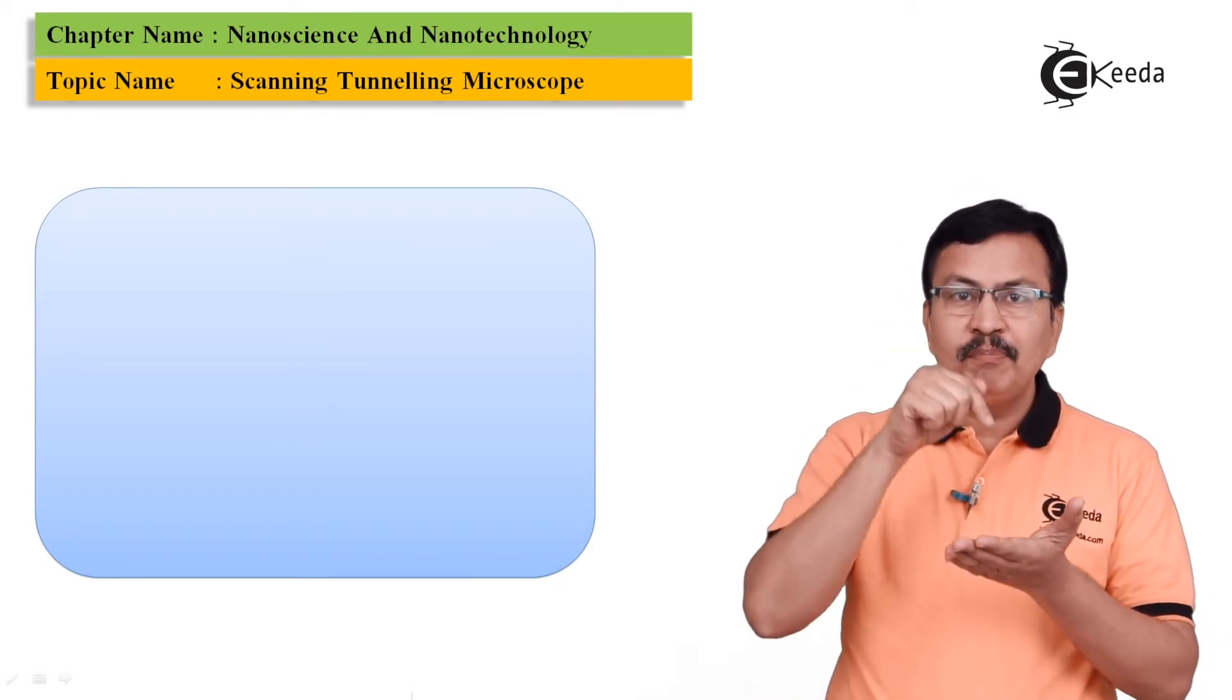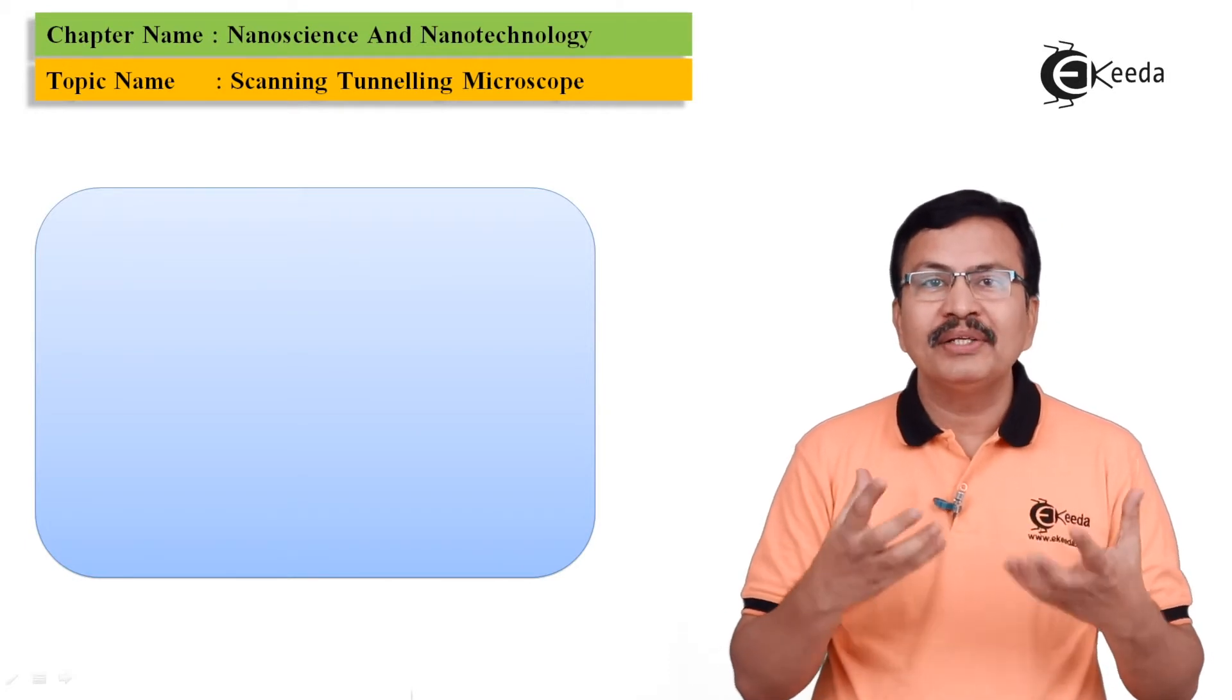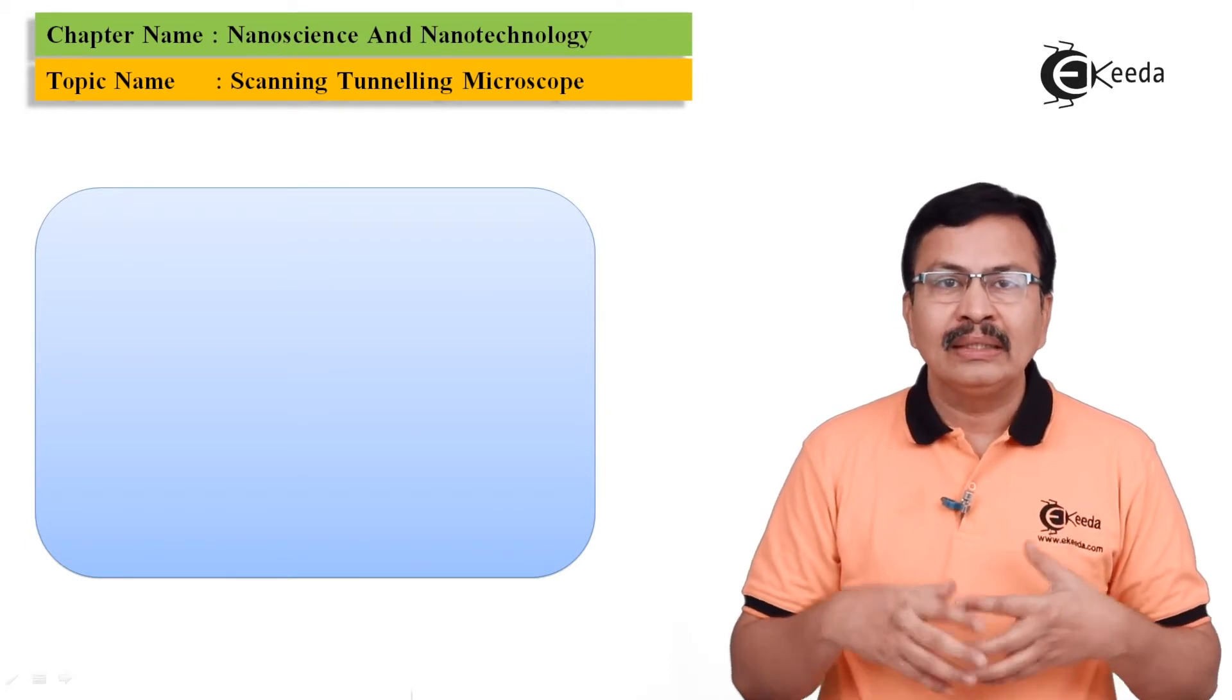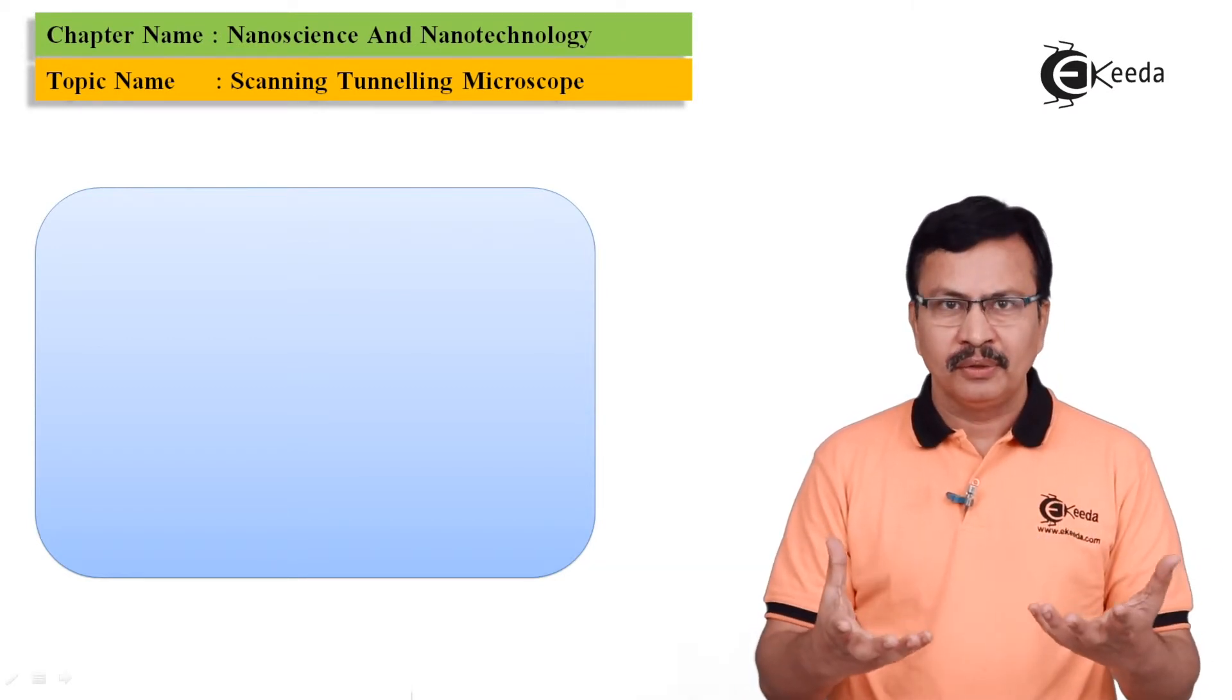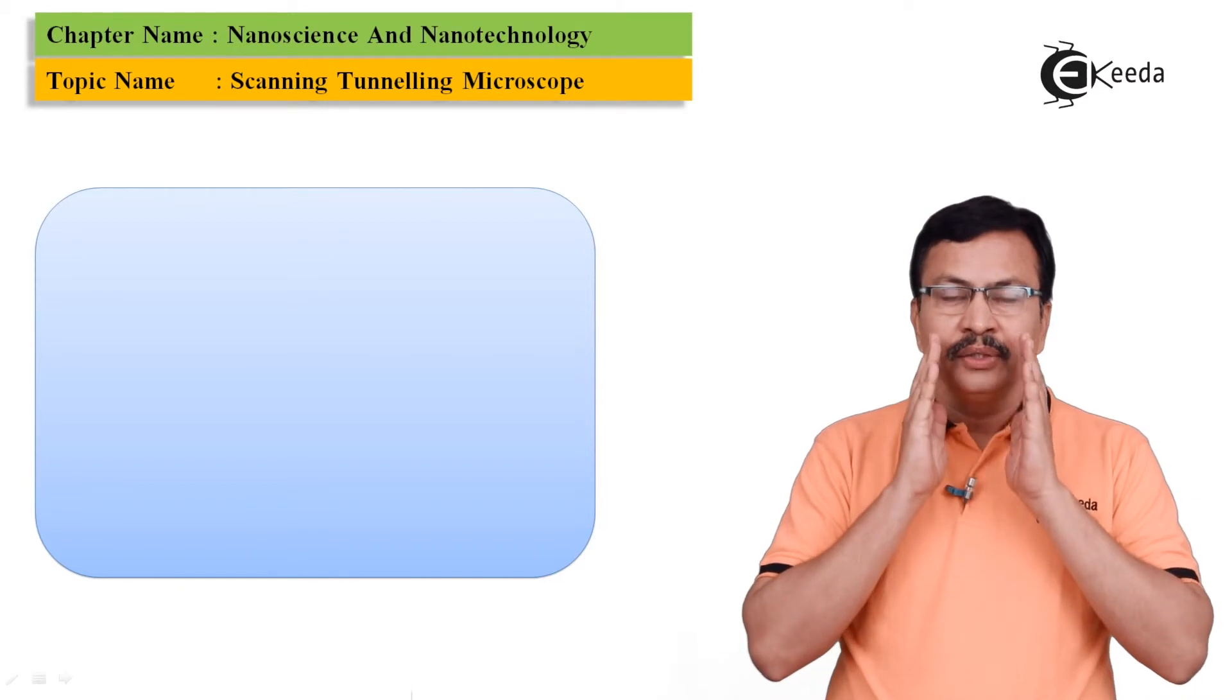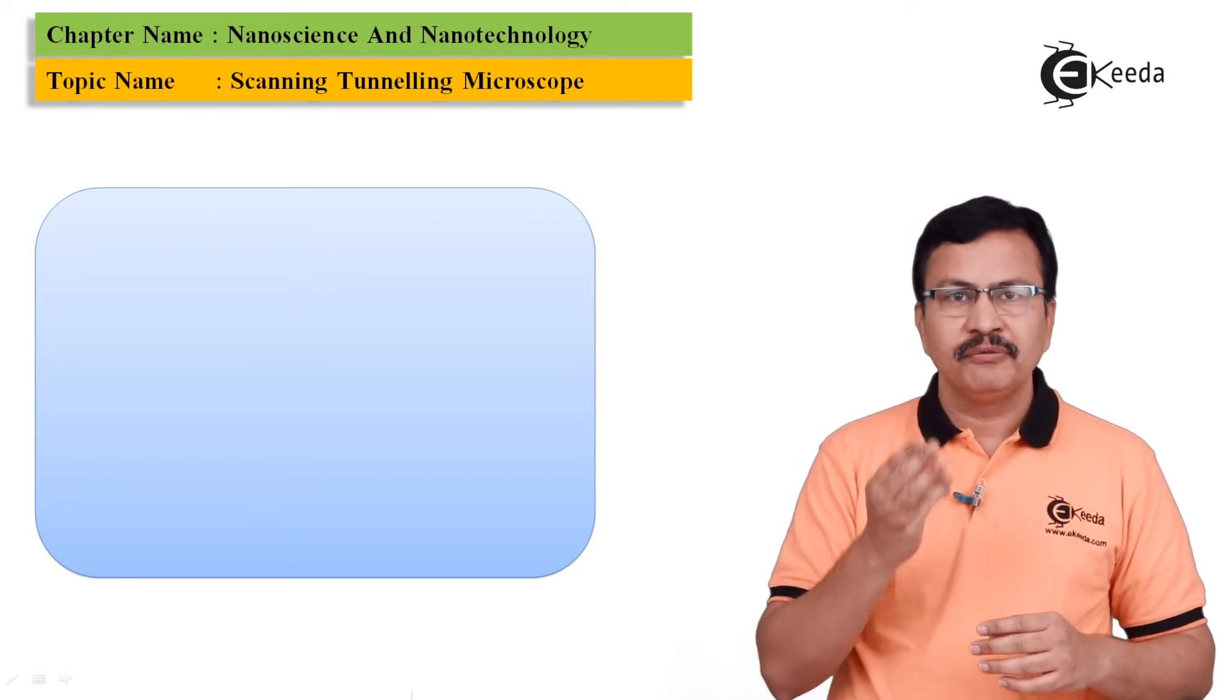One is the tip position, second is the voltage that you are applying and the third is the local density of states of the electron. So your tunneling current is actually determined by these three features.